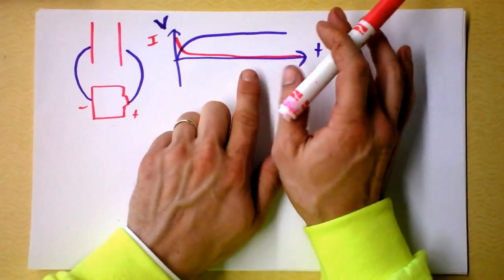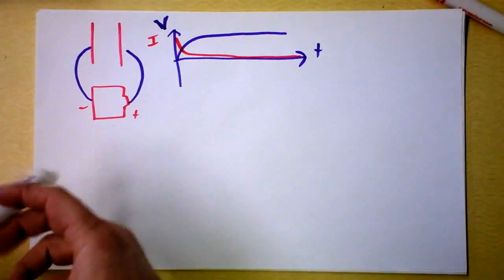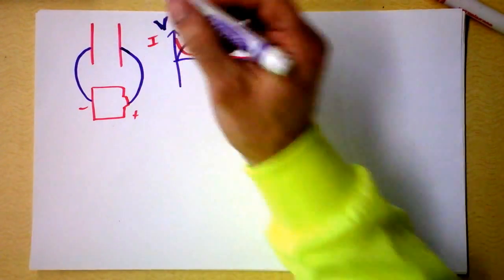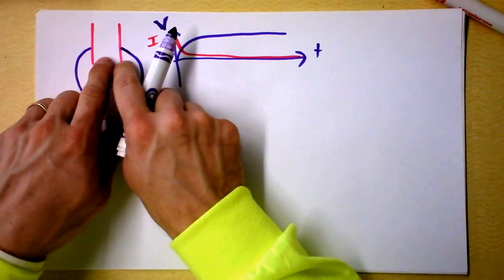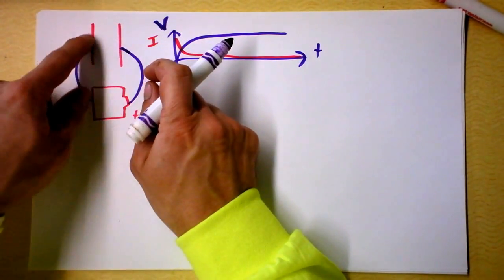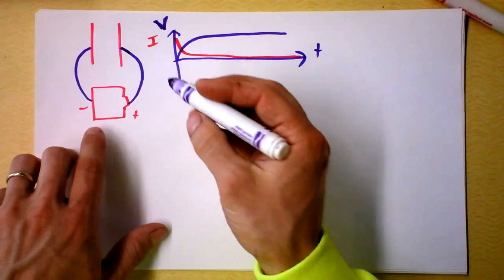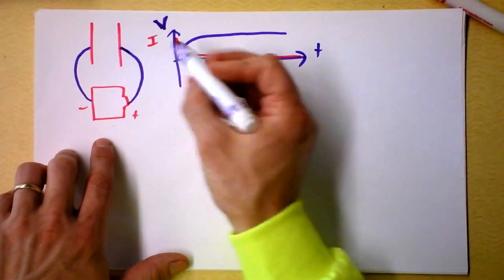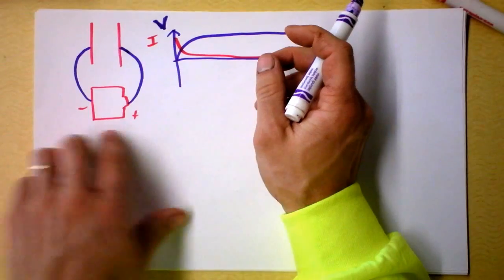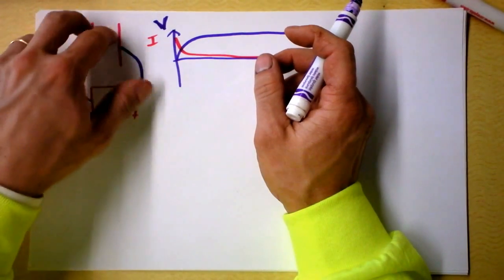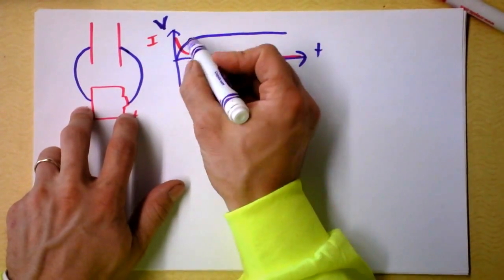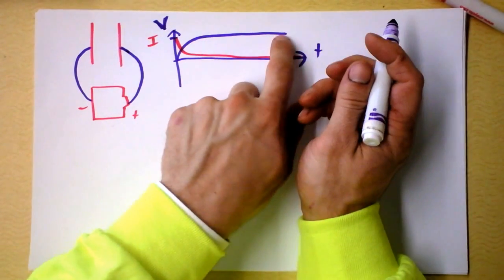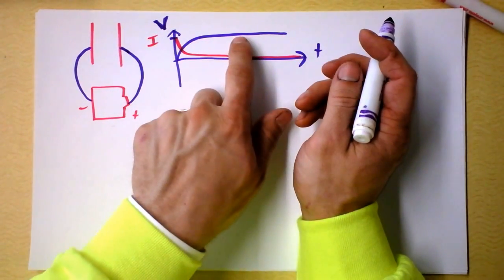We can intuitively understand this: as soon as I make this connection, there's no force against the electrons initially going in that direction. But as the capacitor becomes more and more charged, the voltage difference between the capacitor and the battery approaches zero, because the voltage of the capacitor is approaching the voltage of the battery.